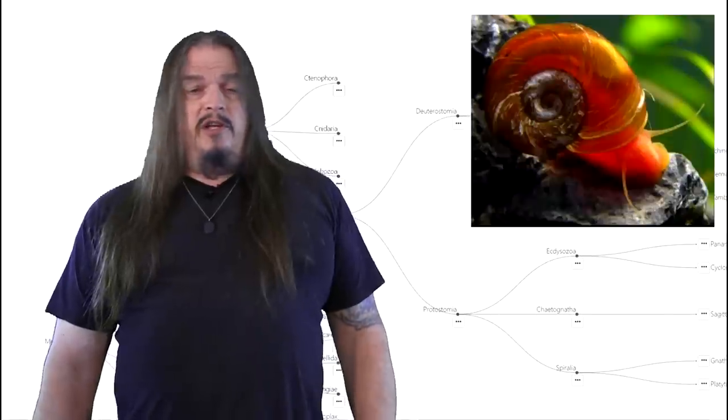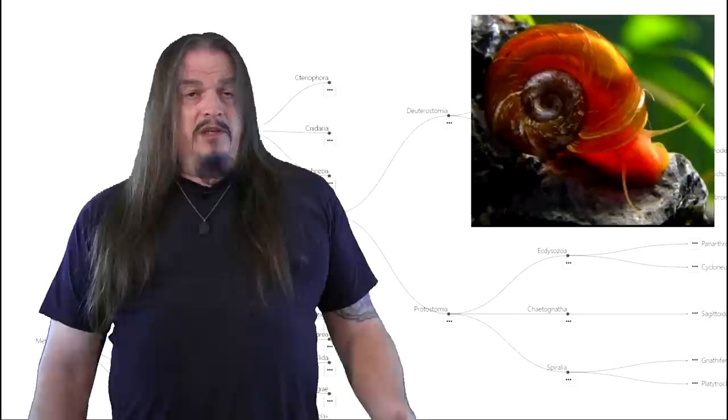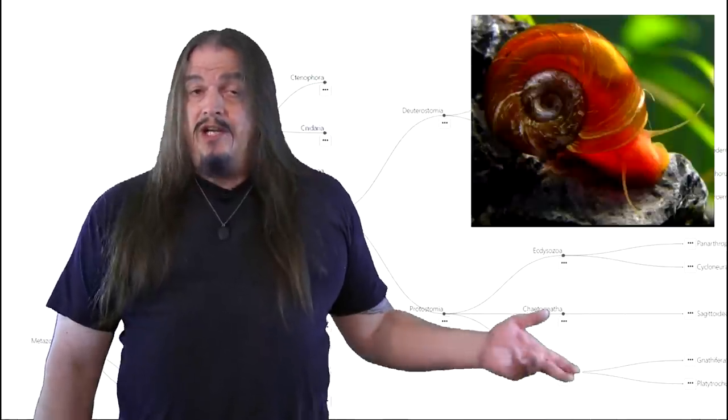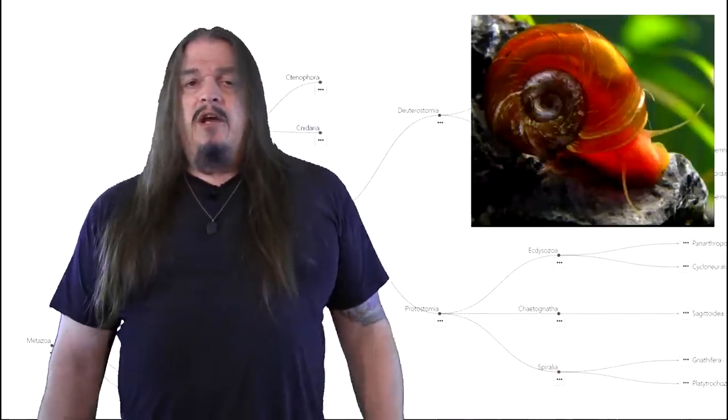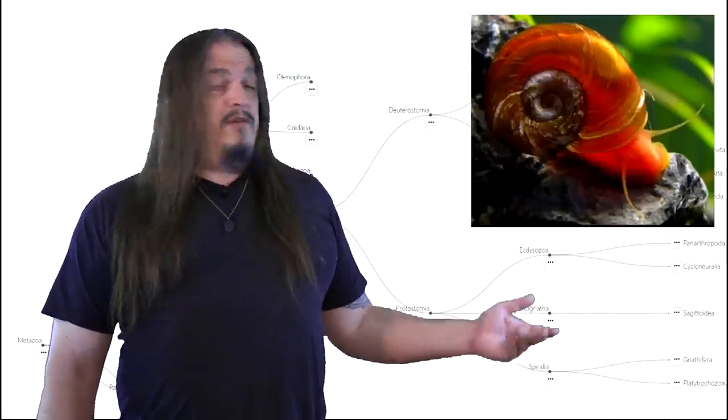And one exception to this is a particular family of snails that has red blood. Molecular studies show that the hemocyanin ancestry is genetically there but it's disabled, forcing an alteration of a new form of hemoglobin that was subsequently derived from myoglobin.